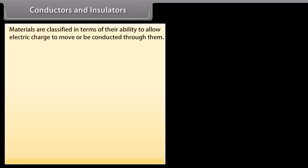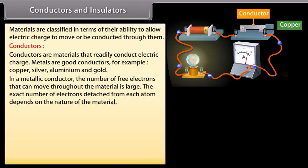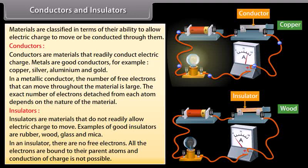Conductors and insulators: Materials are classified in terms of their ability to allow electric charge to move or be conducted through them. Conductors are materials that readily conduct electric charge; metals are good conductors — for example, copper, silver, aluminum, and gold. In a metallic conductor, the number of free electrons that can move throughout the material is large. Insulators are materials that do not readily allow electric charge to move; examples of good insulators are rubber, wood, glass, and mica. In an insulator, there are no free electrons — all electrons are bound to their parent atoms and conduction of charge is not possible.